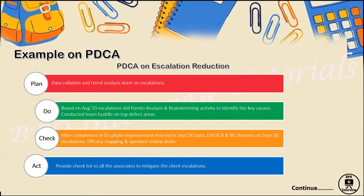Then in the Check phase, after completing the Do phase, I will monitor how the process is going for the next month — whether there is control in escalation from those huddles, dip checks, flyers, shift-start activities, and daily process updates. If some changes were made, including RCA, root cause analysis, and efficacy mapping on operators, all of that is monitored in the Check phase.